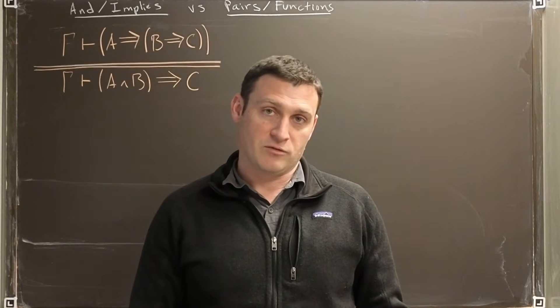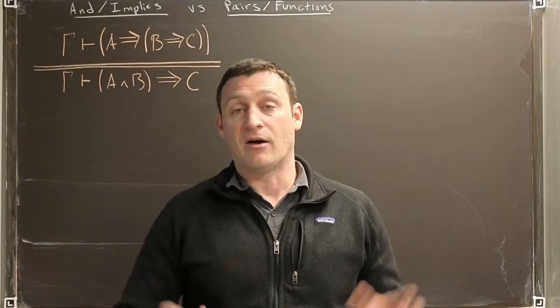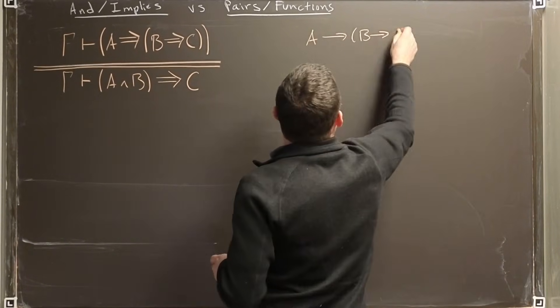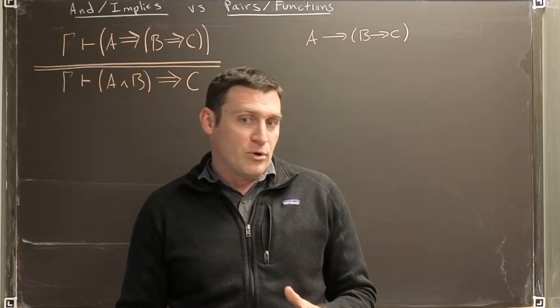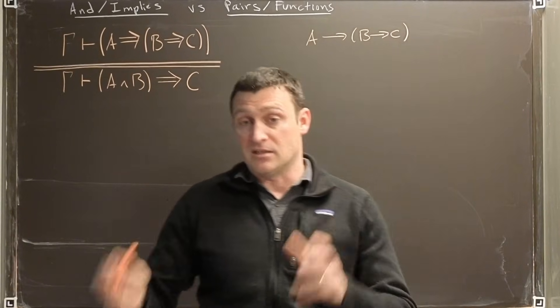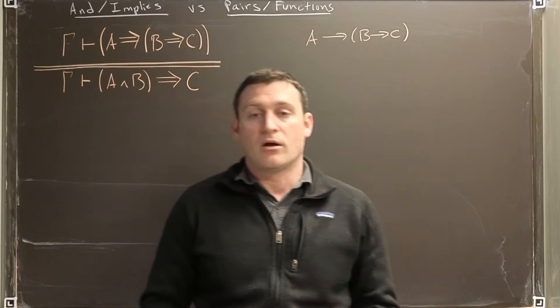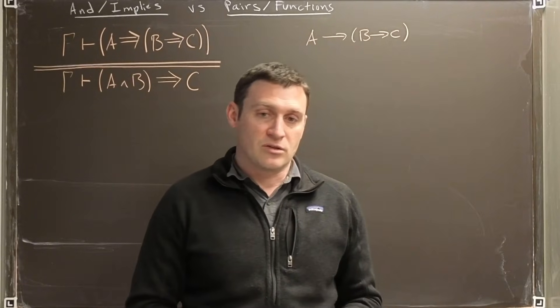So if we just follow our correspondence from our previous videos, we should be able to write down some data types to go with this. I'll keep the names of the types the same as the premise. So what we have here is a data type that's a function on input A. Its output is also functions, but now functions that start with B and end in C. That's a little bit hard to get your head around when you haven't programmed for very long. So it's often the case that you want to translate this into something that's easier to understand.